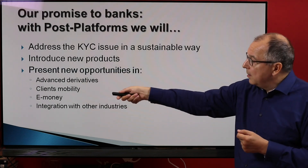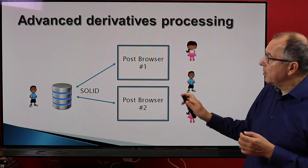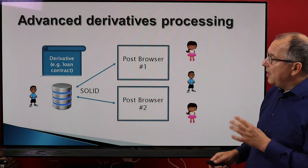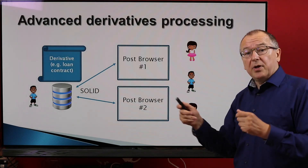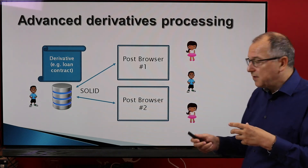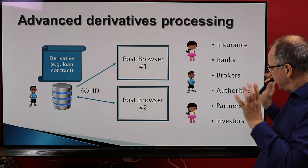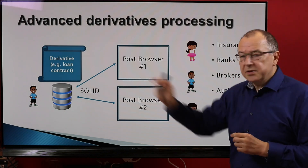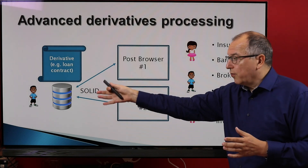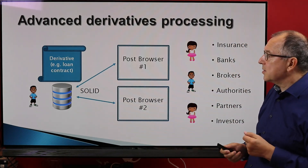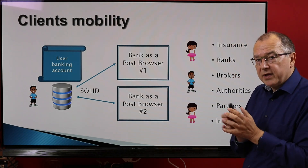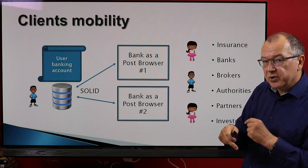We also have some more advanced things to discuss. A person has a solid server and platforms become post-browsers that can review it. Now imagine that instead of a person, a loan contract has its own solid server — a contract processed over 10 years requiring participation of insurance, brokers, banks, authorities, and investors. All these parties can use post-browsers to access the solid server of the loan contract. Or instead of a contract, a banking account could reside on the user's solid server, and banks would deal with accounts held there.